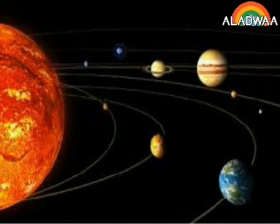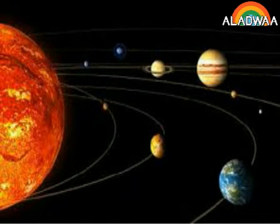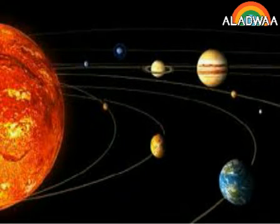Most asteroids rotate between the two orbits of Mars and Jupiter in a certain region called the Asteroid Belt. The belt separates the group of the inner planets from that of the outer planets.